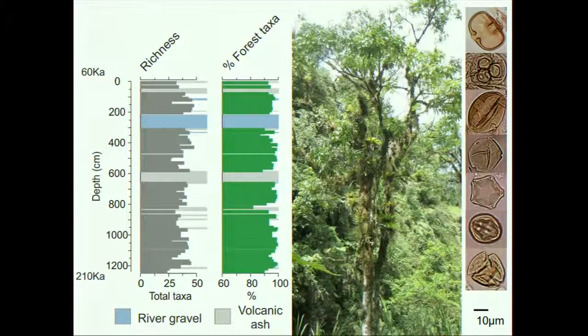Although the richness does show some variations in response to these drivers of change, the average total richness did not fall below 30. This is important, as both the high percentage of forest taxa and the high richness indicate this region remained forested despite these drivers of change. This gives us an important idea about how best to protect this region in response to future drivers of change, and how to conserve the important biodiversity found within it.